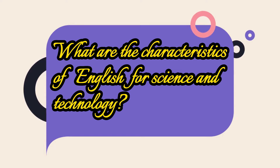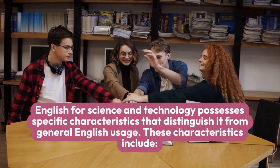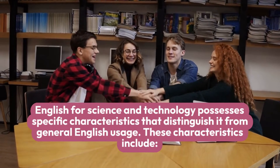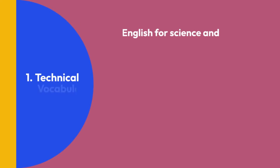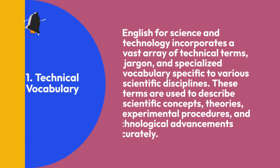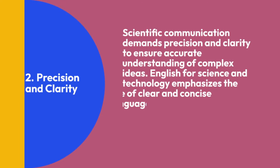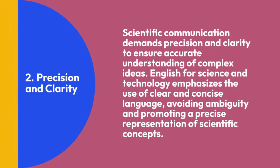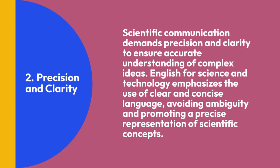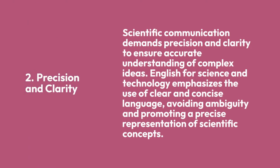What are the characteristics of English for Science and Technology? English for science and technology possesses specific characteristics that distinguish it from general English usage. First, Technical Vocabulary: English for science and technology incorporates a vast array of technical terms, jargon, and specialized vocabulary specific to various scientific disciplines. These terms are used to describe scientific concepts, theories, experimental procedures, and technological advancements accurately. Second, Precision and Clarity: Scientific communication demands precision and clarity to ensure accurate understanding of complex ideas.